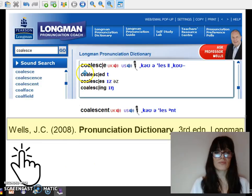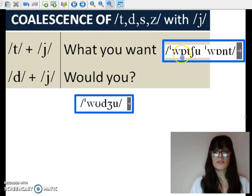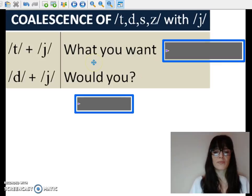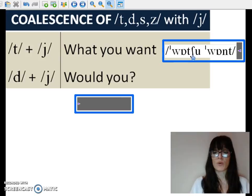Well, in the first phrase, we can see how the alveolar fortis plosive comes into contact with the palatal semivowel and changes into a palatal alveolar affricate. What you want? Something similar happens in the case of would you, with the palatal alveolar voiced affricate.